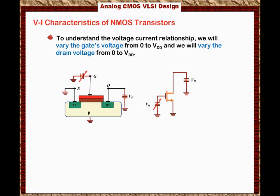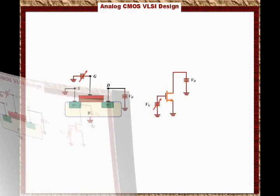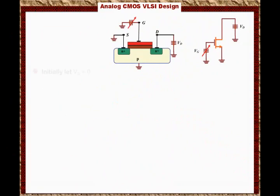We will begin by making VD very small — varying from 0 to VDD but starting very close to 0. Initially, let VG equal 0, and let's see what happens when we set VG equals 0.